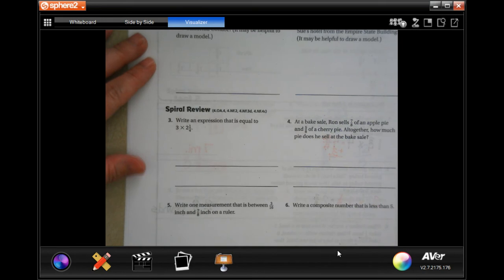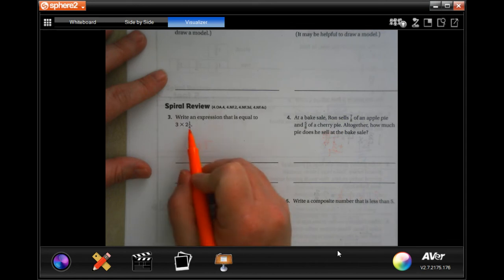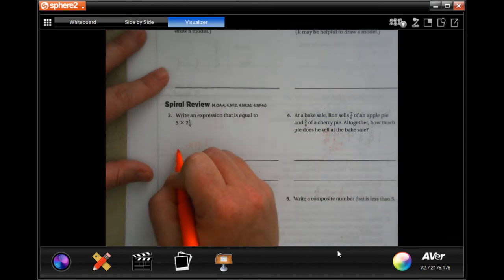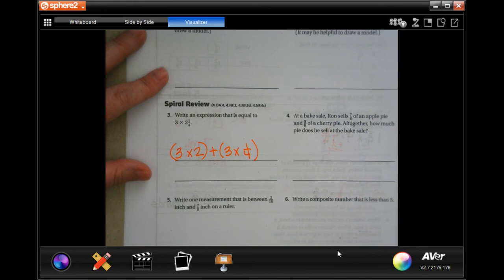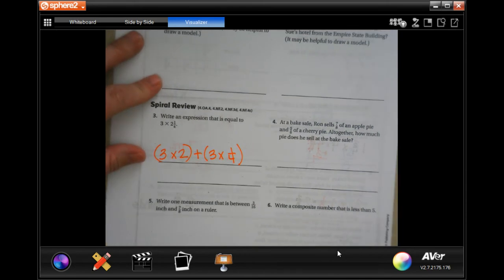So, write an expression that is equal to three times two and one-fourth. So, we could do three times two, and three times one-quarter. Done.